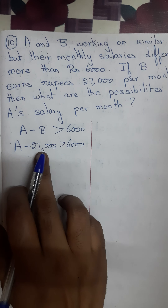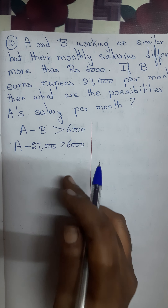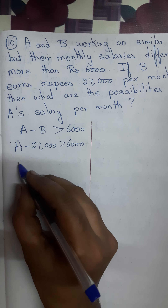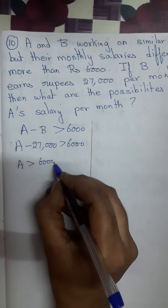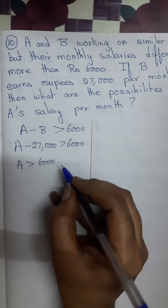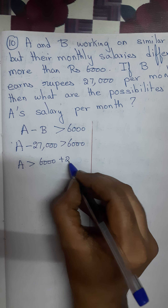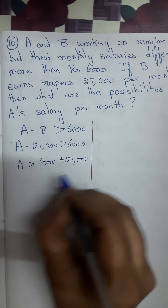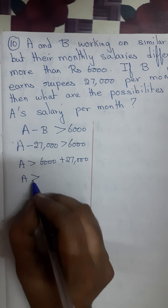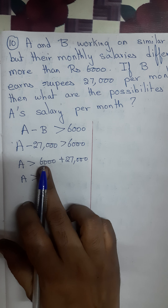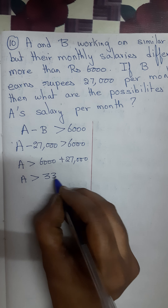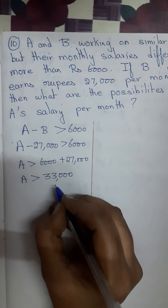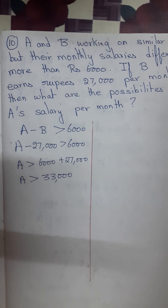Now, let me take Rs. 27,000 to the other side. It will become A greater than Rs. 6,000 plus Rs. 27,000. So A's salary should be greater than Rs. 33,000.